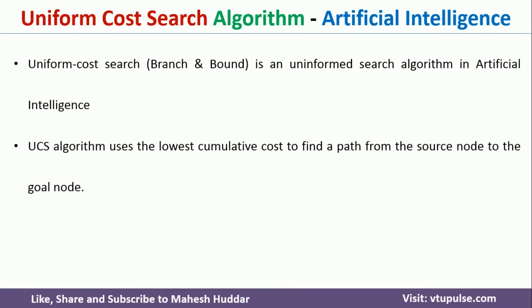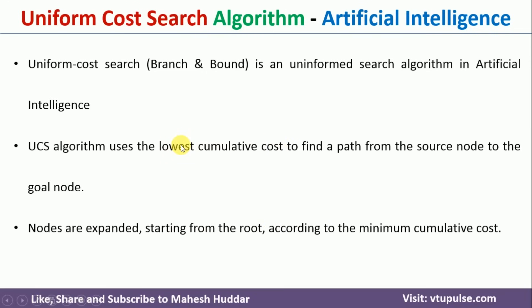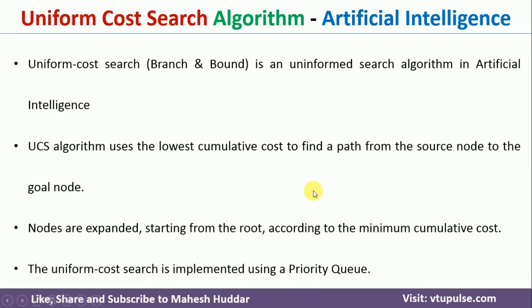Uniform Cost Search Algorithm uses the lowest cumulative cost to find the path from the source node to the goal node. First, we need to find the cumulative cost of each and every path, and the one with the lowest cost will be considered as the optimal path. We will keep expanding the root node until we get the minimum cumulative cost to reach the goal node. The algorithm is implemented with the help of a priority queue.